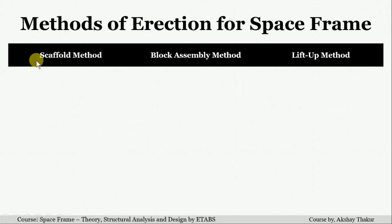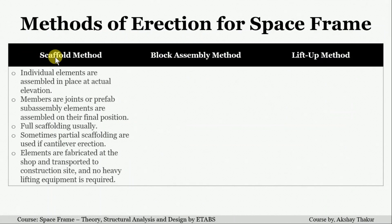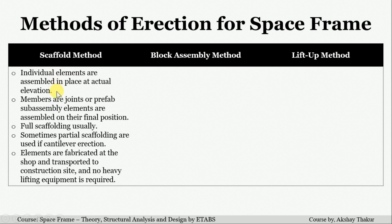Let's start with the scaffold method. In the scaffold method, the individual structural elements are assembled in place at the actual elevation by the workers. This method is not suitable where the space frame is at a higher elevation, because workers need to work at the same elevation, and from a safety point of view, there will be chances of accidents.